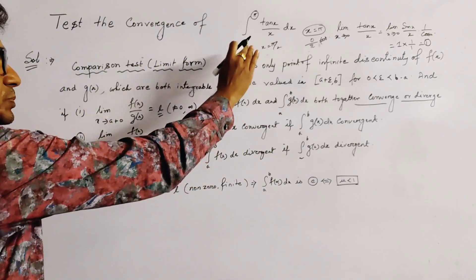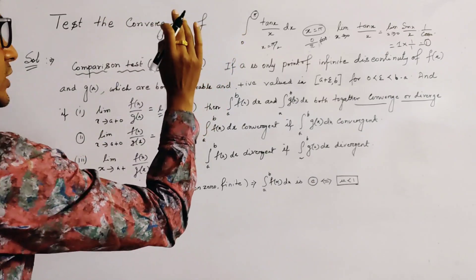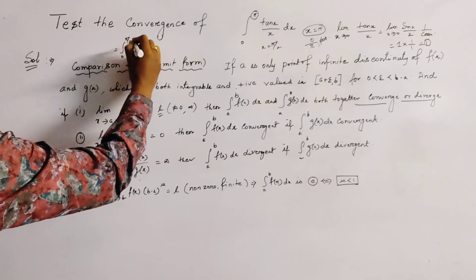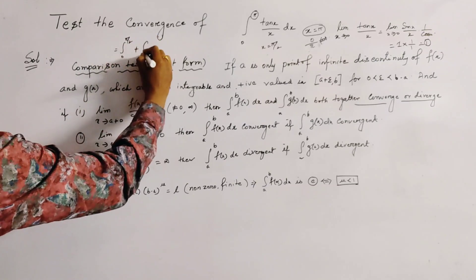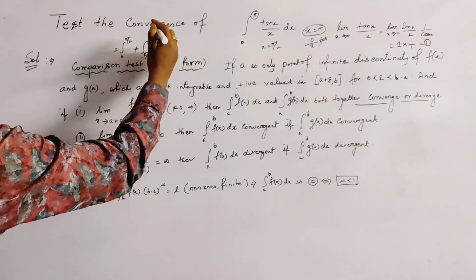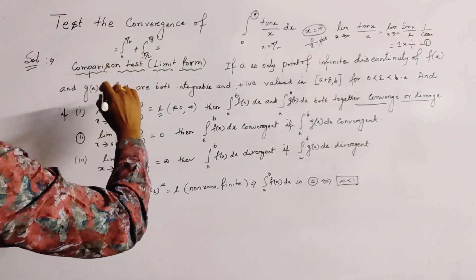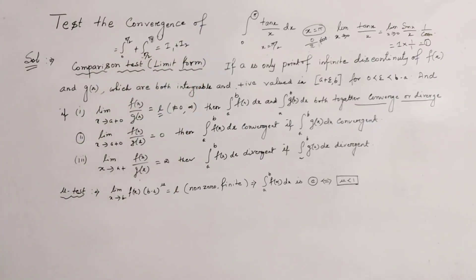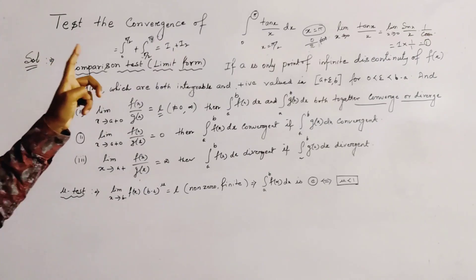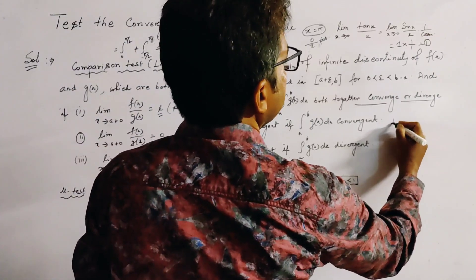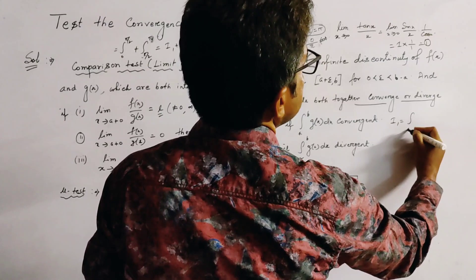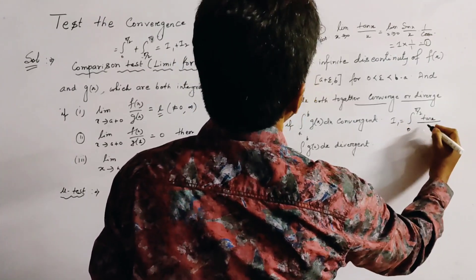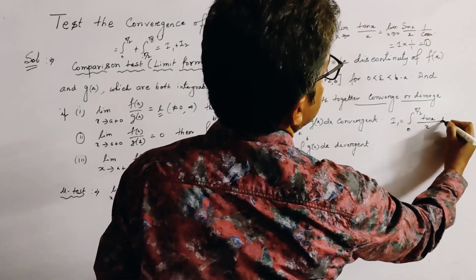So we split the interval 0 to π into two intervals. The first one is the integral from 0 to π/2, and the second one is the integral from π/2 to π. We name these two integrations as I₁ plus I₂. We first consider the integration I₁, which is given by the integral from 0 to π/2 of tan x divided by x dx.